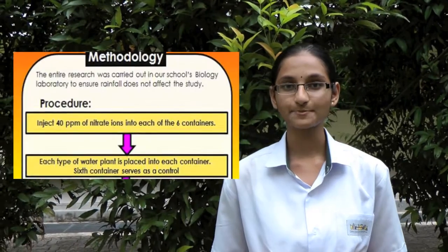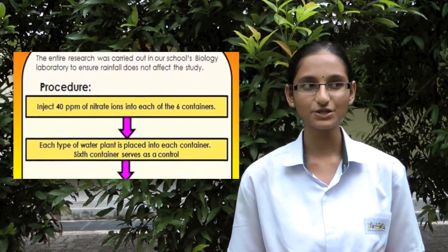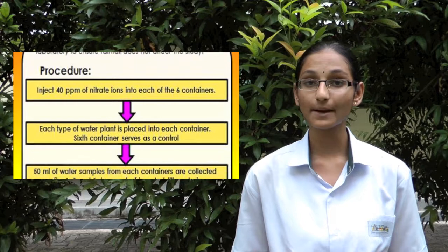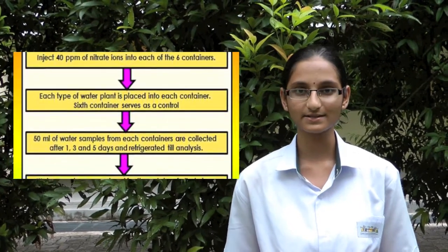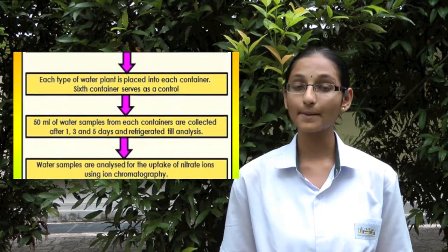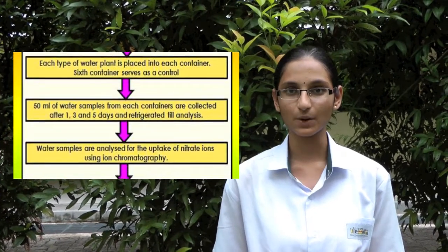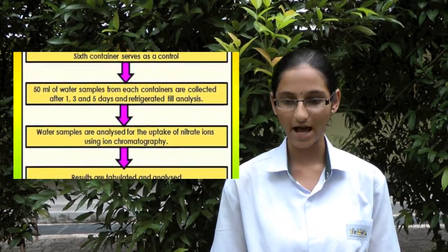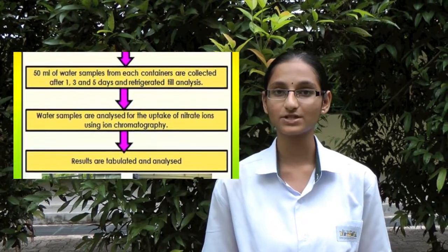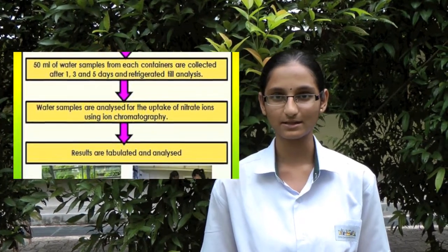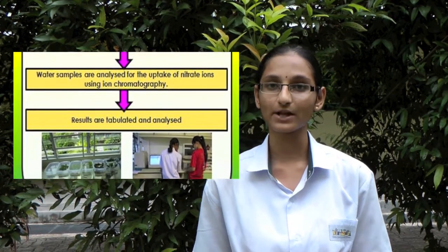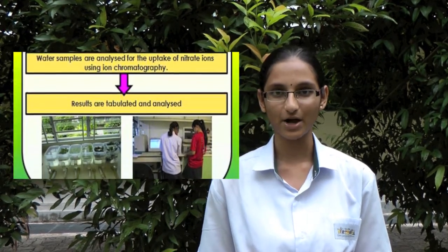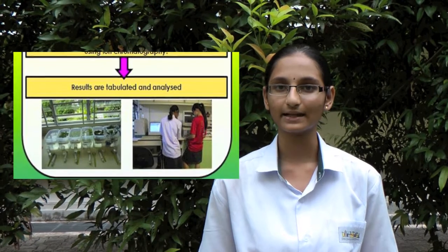The procedures. Firstly, we injected 40 parts per million of nitrate ions into each of the six containers. Each type of water plant was placed in their respective containers; the sixth container served as a control. 50 ml of water samples from each container were collected after 1, 3, and 5 days and kept in the refrigerator until analysis was done. Water samples were analysed for the uptake of nitrate ions using ion chromatography. Results were tabulated and analysed.